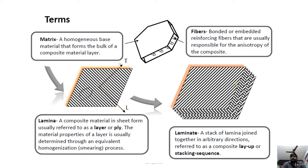The process of stacking one lamina on another is known as the stacking sequence. The matrix is a homogeneous base that forms the bulk of the composite material. The fibers embedded for reinforcing are responsible for the anisotropy of the composite. A lamina is a material in sheet form, usually referred to as a ply or layer, whose material properties are determined by a homogenization process.